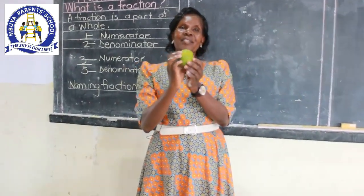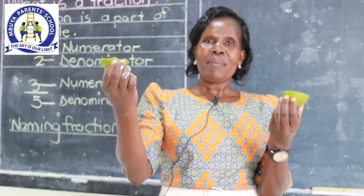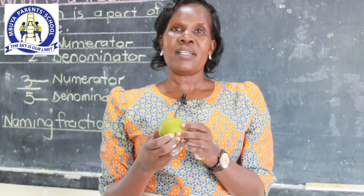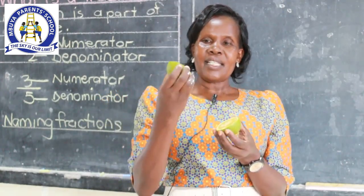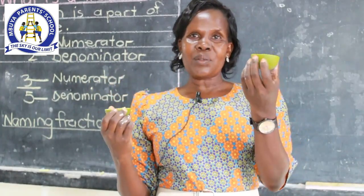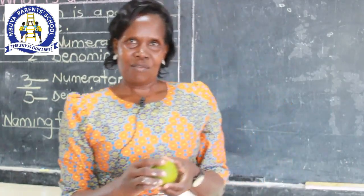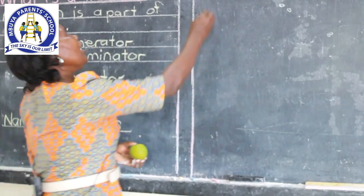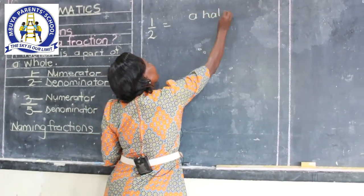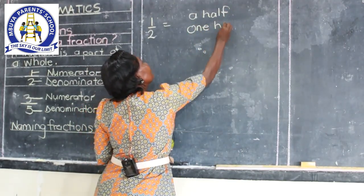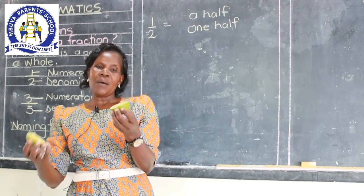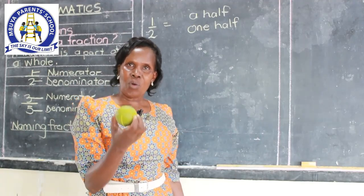Now, children, this was my whole. I've cut it into two equal parts — this is one part, and this is one part. All of it will be out of two. We get the denominator by counting the number of times a whole has been divided. If I give this to Mary and this one to John, John will get one part out of two, and Mary will also get one part out of two. They form a fraction which we call a half. In figures, we write it as one out of two, and in words, we write it as a half, or we can say one half.